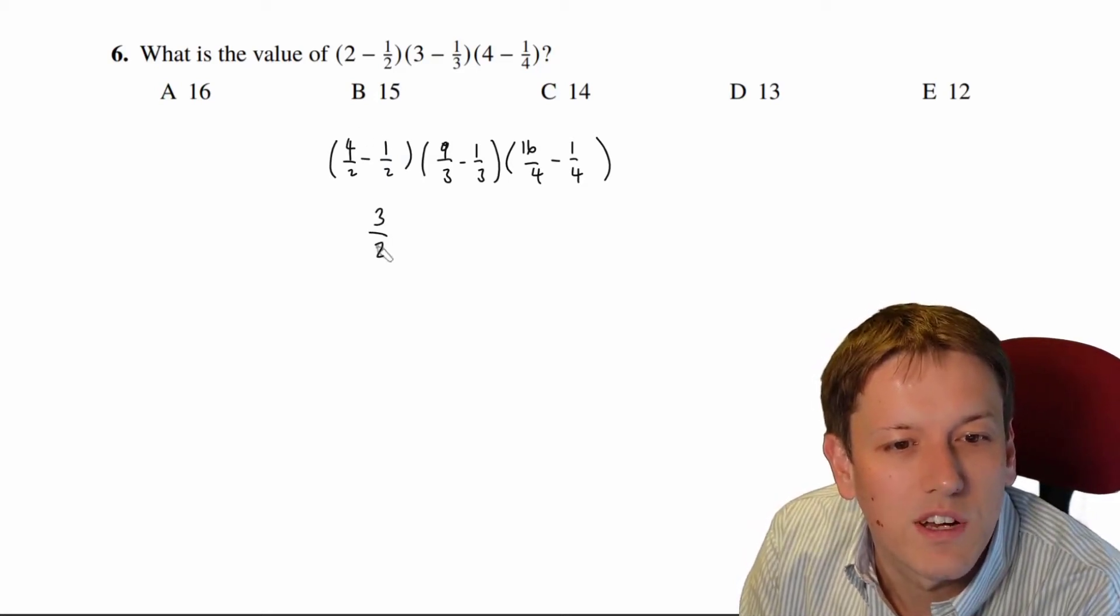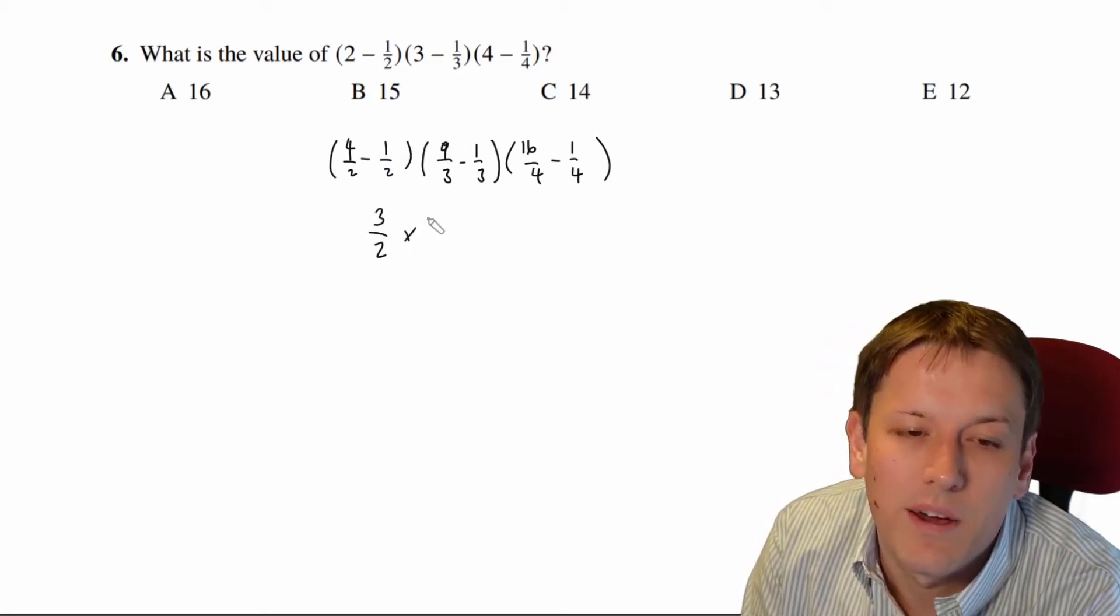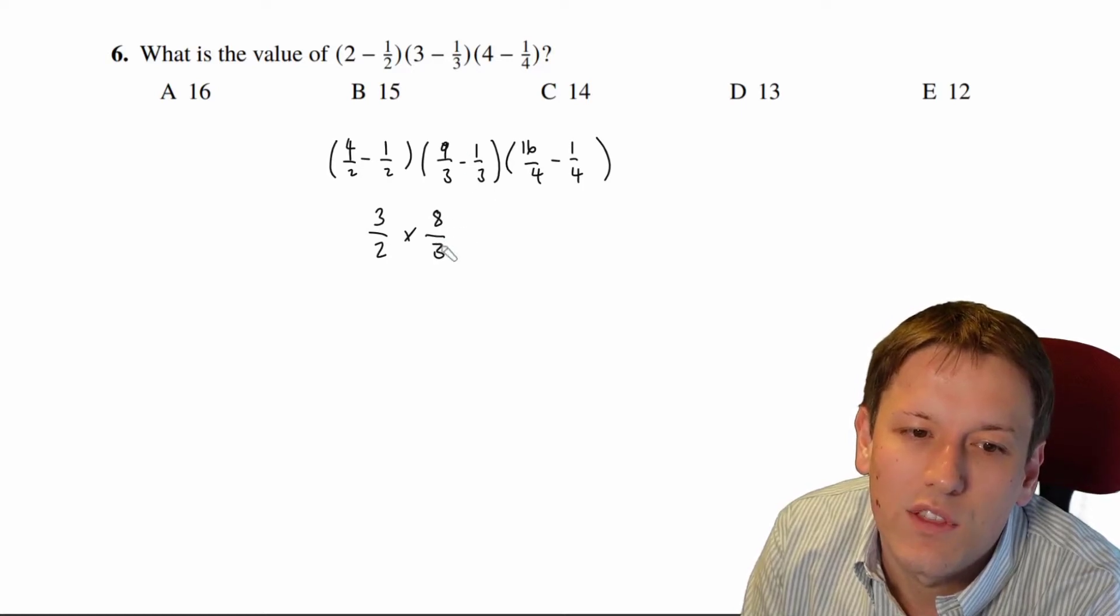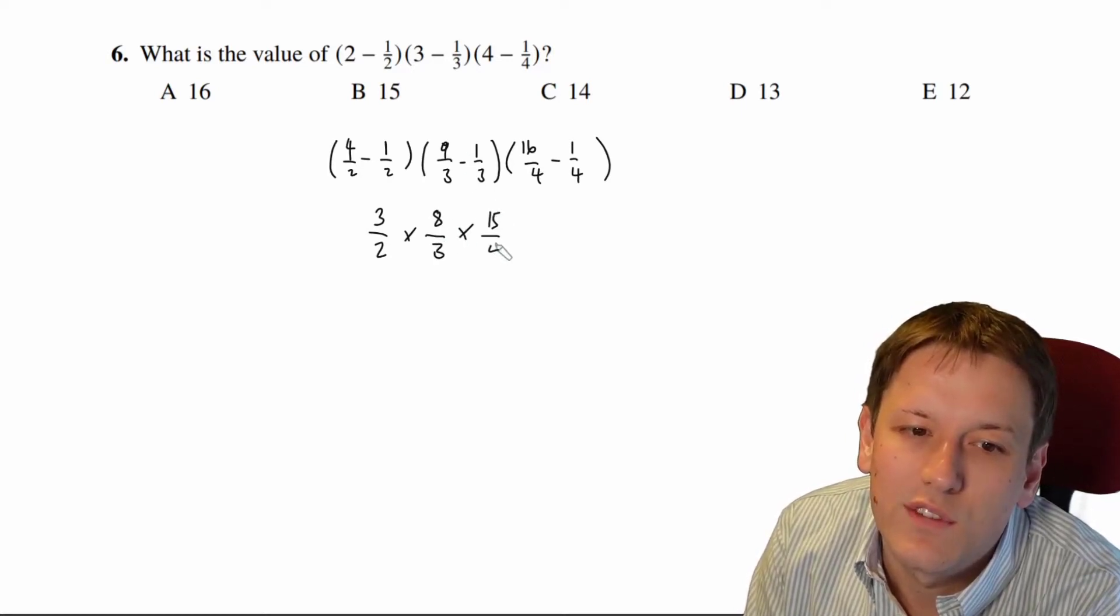So I've got 4 minus 1 is 3/2, and I want to multiply that by 8/3, and then multiply that by 15/4.